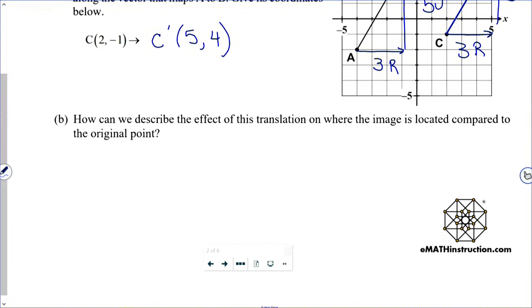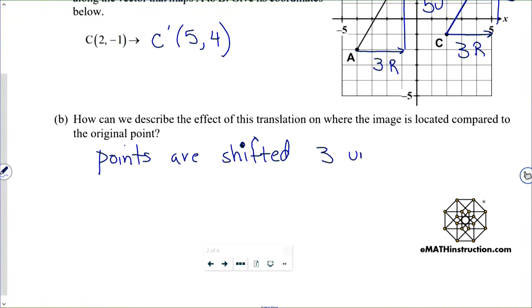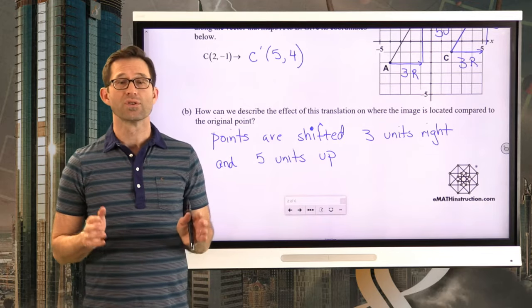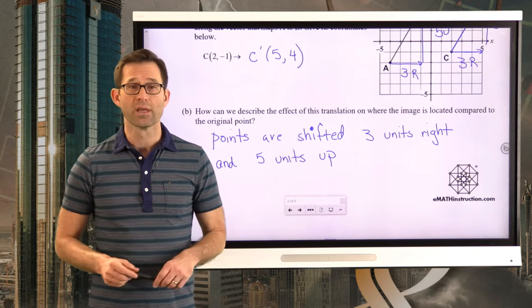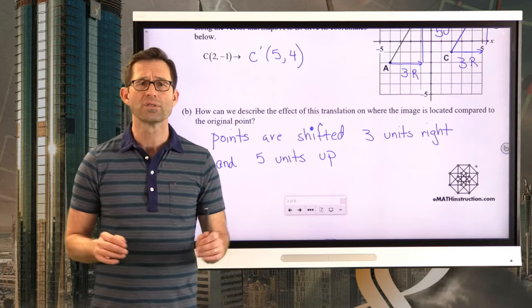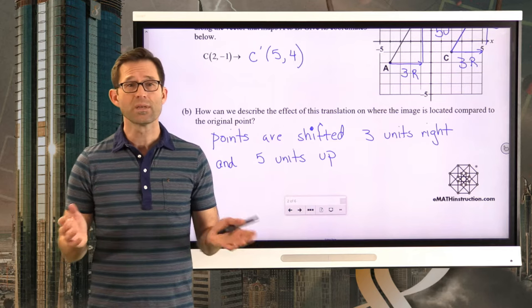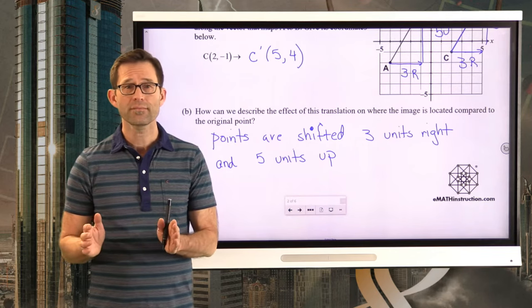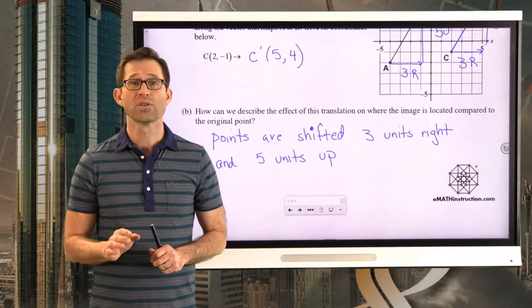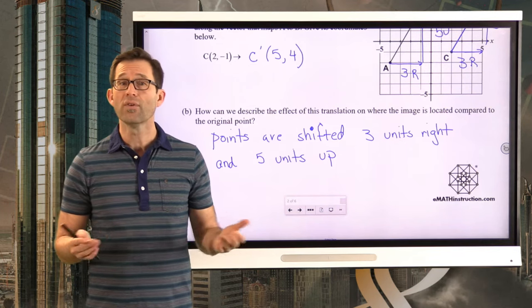Points are shifted three units right and five units up. Very often, that is how translations are described in the coordinate plane. We simply say: take every point and move it a certain number of units left or right, and a certain number of units up or down. That makes it exceptionally easy to talk about translations and to give rules for them.